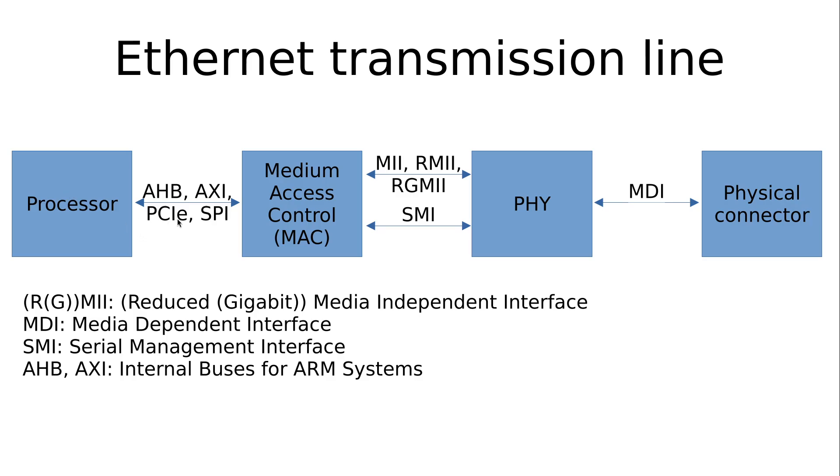On x86 systems normally we are using the PCI Express bus to connect the processor to the MAC. And in some embedded systems we even use something like SPI.